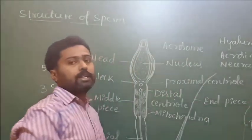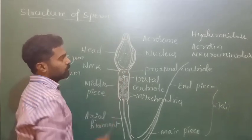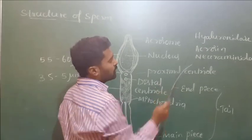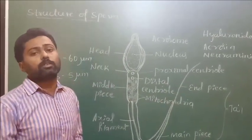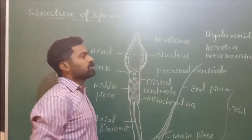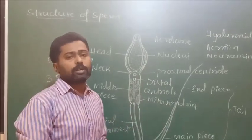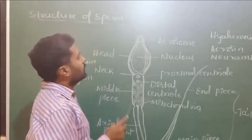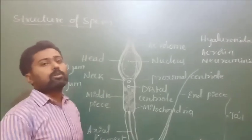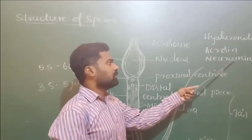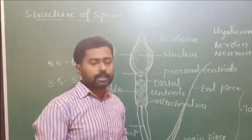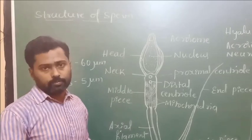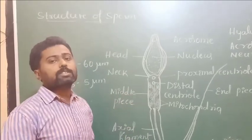There are three proteolytic enzymes secreted by the acrosome: hyaluronidase, acrosin, and neuraminidase. They are responsible for digesting the wall of the ovum, helping the sperm penetrate the ovum. The ovum is surrounded by layers like corona radiata and zona pellucida, and sperm penetration is made possible by these proteolytic enzymes. The acrosome is derived from the Golgi bodies of the spermatids.